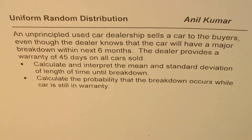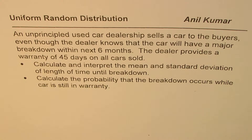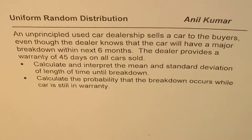I'm Anil Kumar and in this video we'll discuss uniform random distribution with an example. An unprincipled used car dealership sells a car to buyers even though the dealer knows that the car will have a major breakdown within the next 6 months. The dealer provides a warranty for 45 days on all cars sold. Calculate and interpret the mean and standard deviation of length of time until breakdown, and calculate the probability that breakdown occurs while the car is still in warranty.